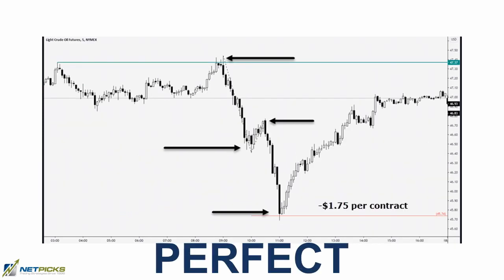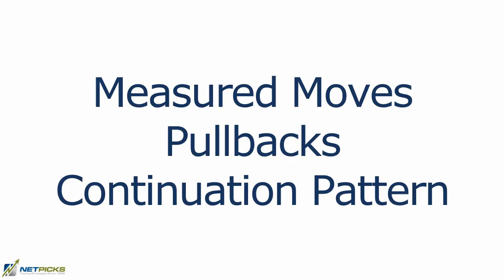This is a five-minute chart of crude oil. Price fell $1.75 per contract if you shorted, and you can see this price move went right to the 100% projection and then bounced off again. Now let's look at it as a continuation pattern — a pullback resolution.